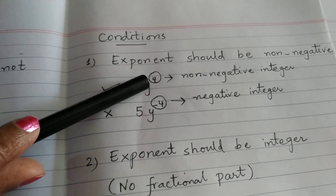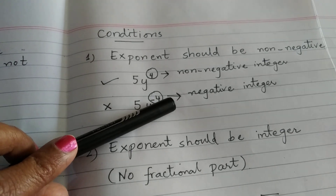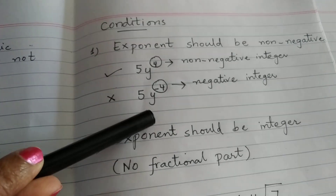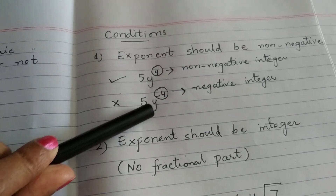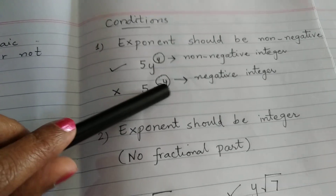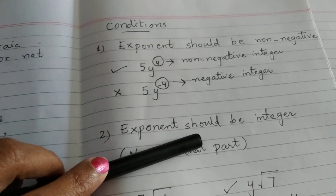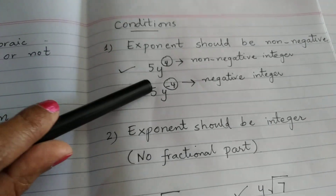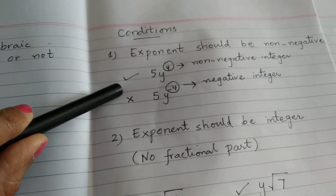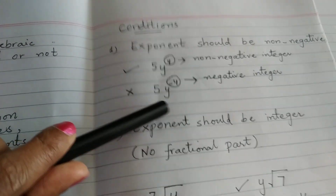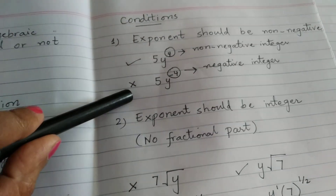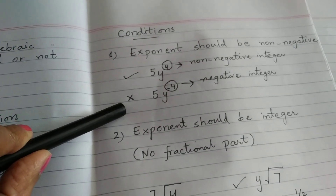If we note 4, this is a non-negative integer, so it is a polynomial expression. But if we look at 5y with exponent minus 4, then minus 4 is negative. So if the exponent is a positive integer, then it is a polynomial expression. But if it is a negative integer on the variable, then it is a non-polynomial expression.